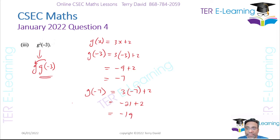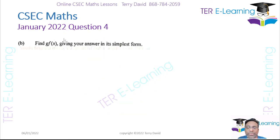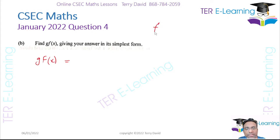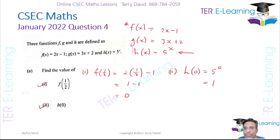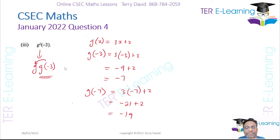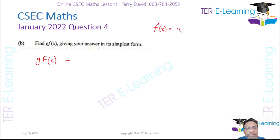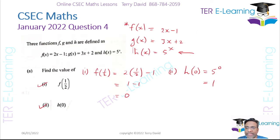This next part asks us to find the composite function gf(x). Let me write down what g and f are: f(x) = 2x − 1 and g(x) = 3x + 2.